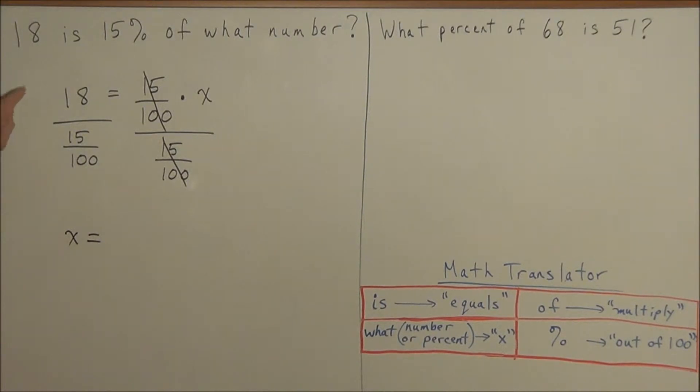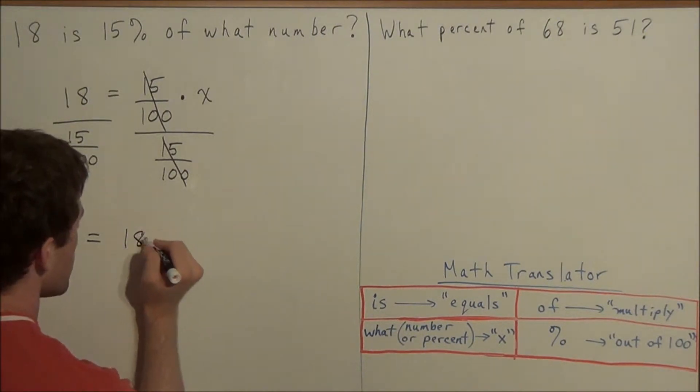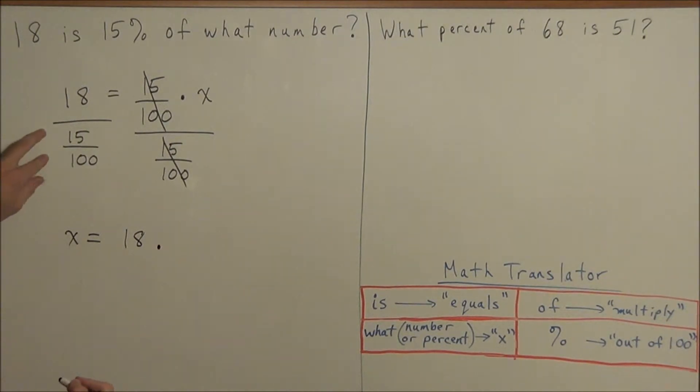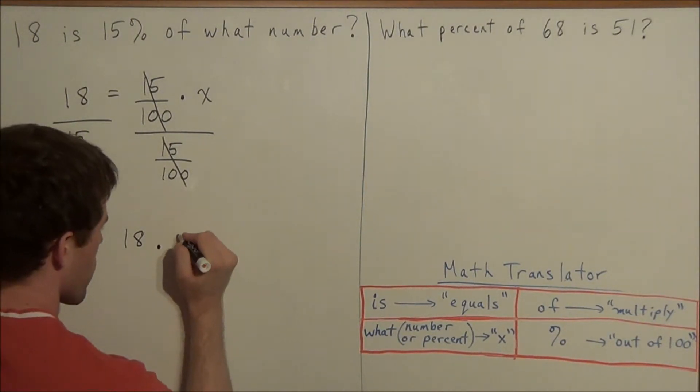And now to divide by fractions, I'll use that keep change flip technique, meaning we're going to keep the numerator 18, we're going to change this operation to multiplication, and we're going to flip the fraction in the denominator to 100 over 15.